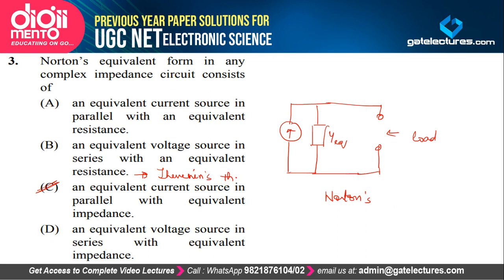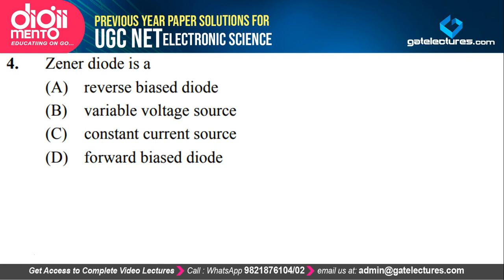Now look at the next question about Zener diode. A Zener diode is basically a reverse biased diode. It can be used in forward bias also, but then it loses its uniqueness and behaves like any other ordinary P-N junction diode. The specialty of a Zener diode is that it is a constant voltage diode — you keep increasing the current through this diode and it is still going to give you a constant voltage across it.